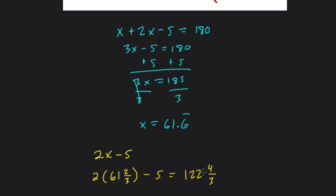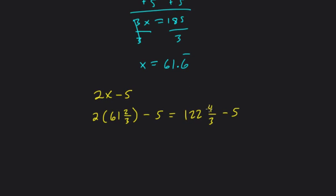So here, 122 and 4 thirds minus 5. I think of 122 and 4 thirds as 122 plus 1 and 1 third. That's what 4 thirds is. So 123 and 1 third. Those are equivalent, minus 5. 123 minus 5 is 118. And we have 1 third. So it's 118 and 1 third degrees. That's the other angle.